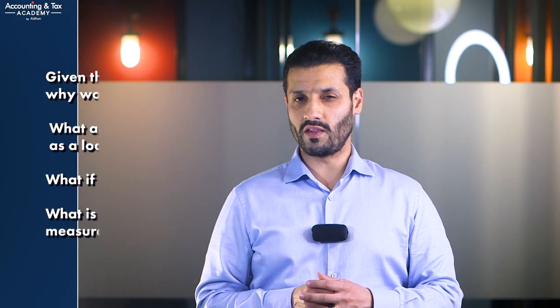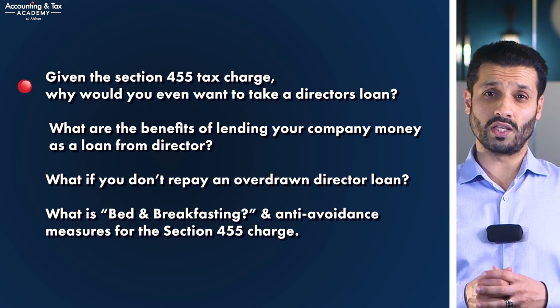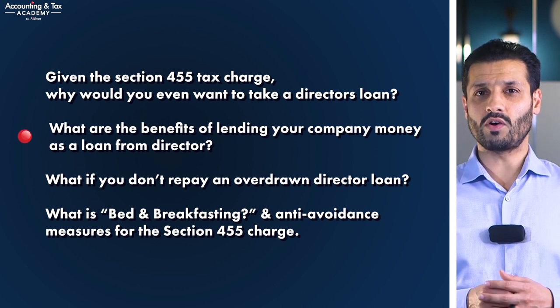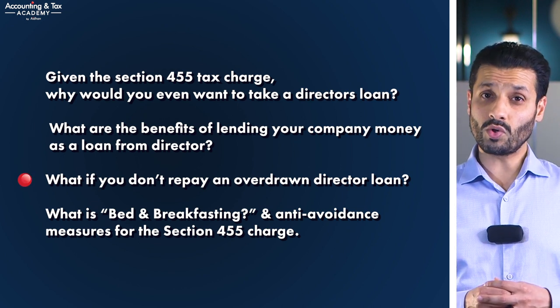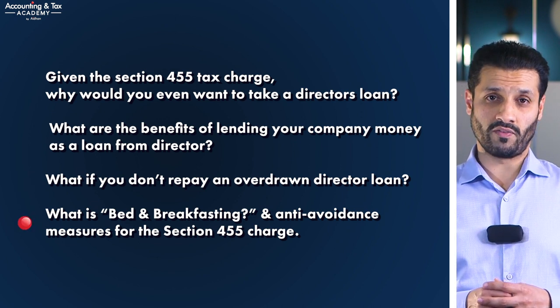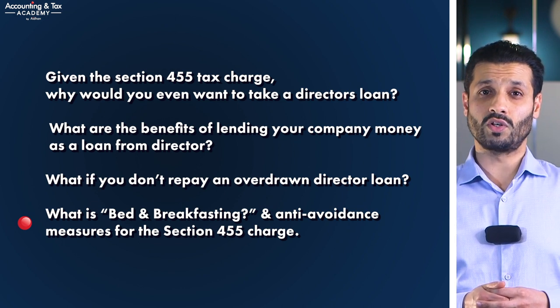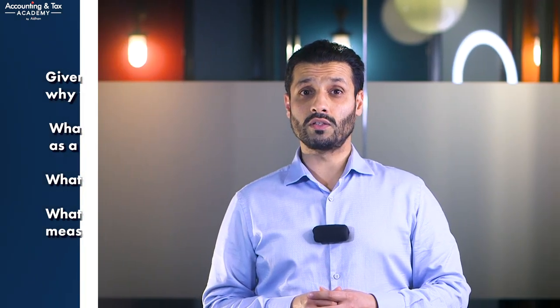In part two of our director loan account series, we're going to address the following questions: given the Section 455 tax charge, why would you even want to take an overdrawn director loan and what are some of the benefits? What are the benefits of lending your company money as a loan from director? What if you don't or never repay an overdrawn director loan? And something called bed and breakfasting — the anti-avoidance measures for when you repay a loan to avoid the Section 455 tax charge and simply borrow the money back again soon after. Click the bell notification icon to make sure you get notified when we release this video.